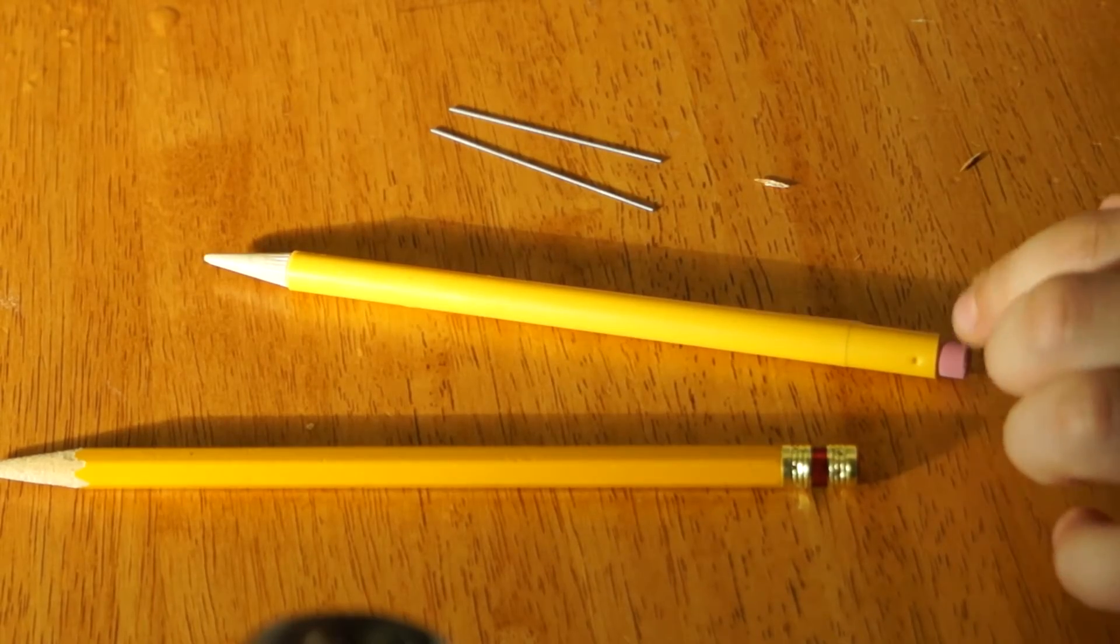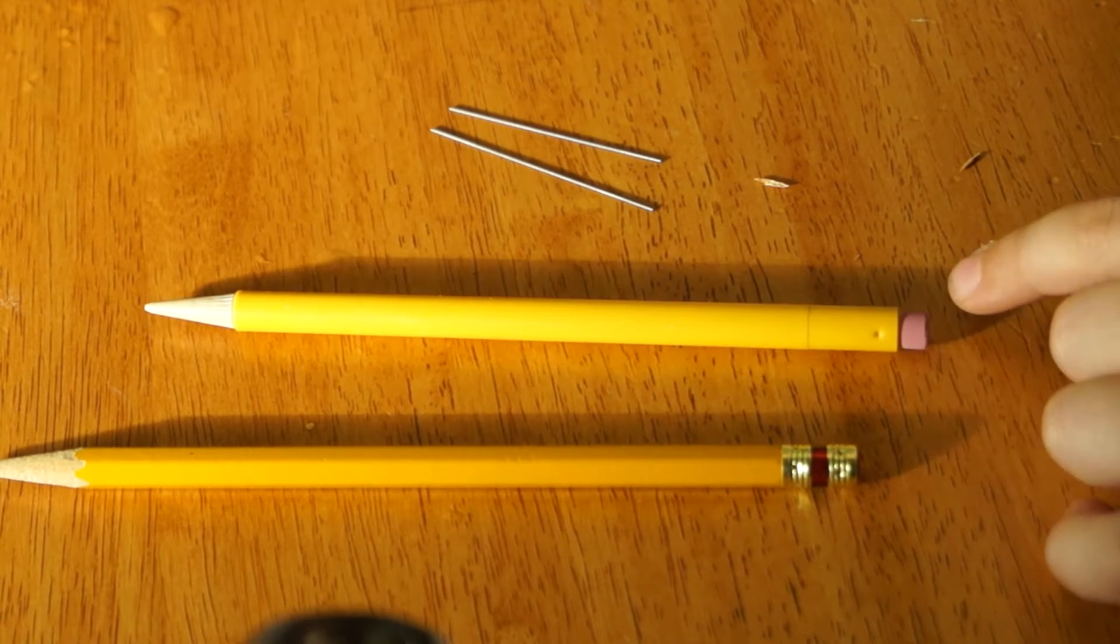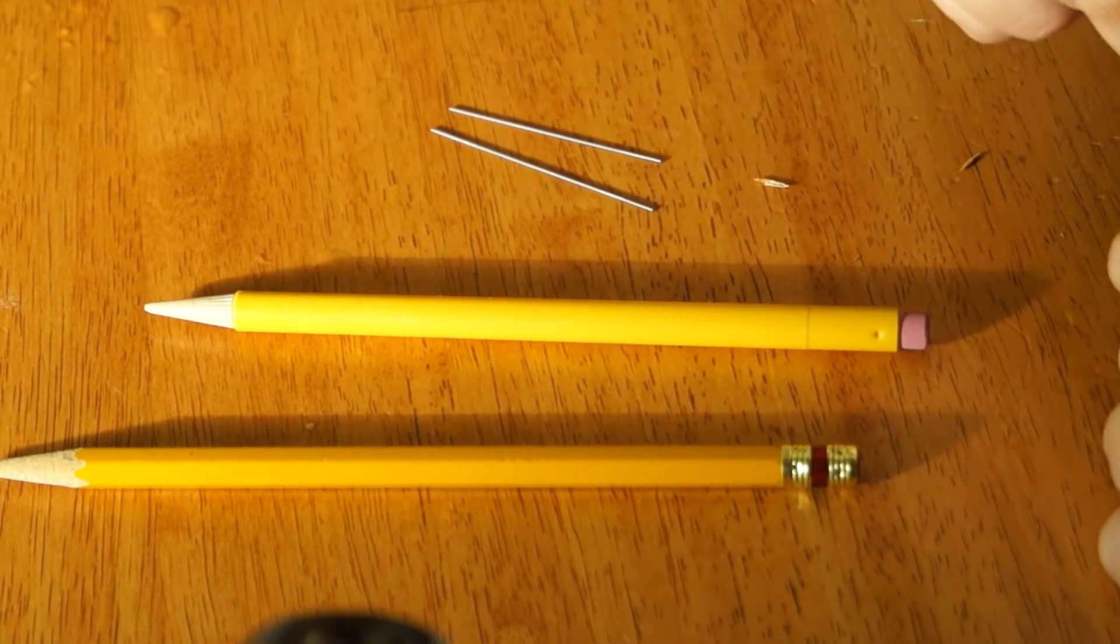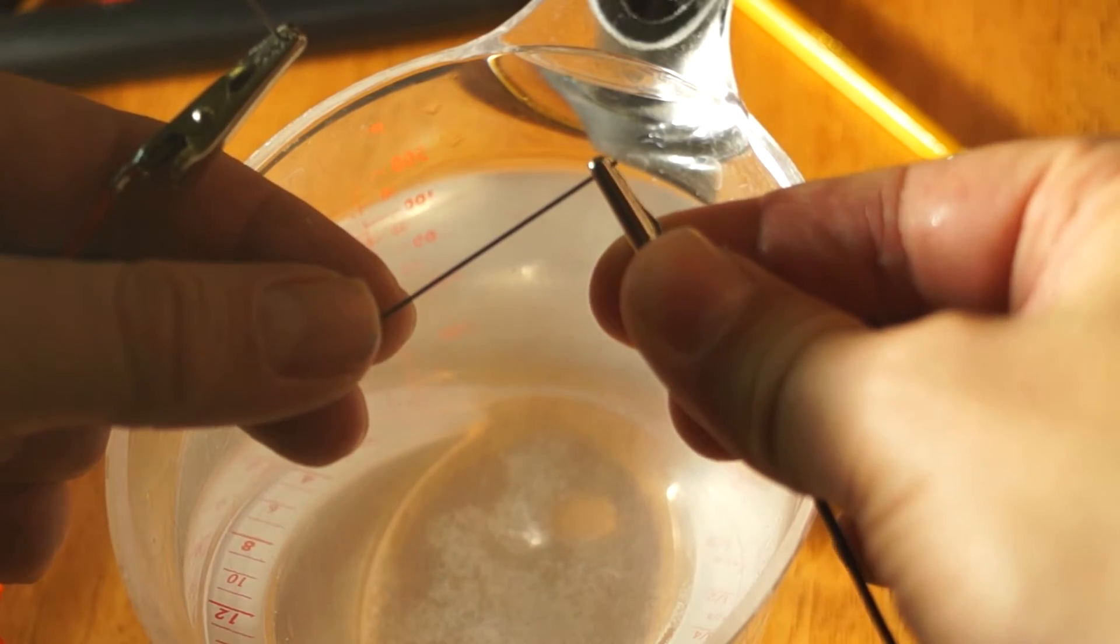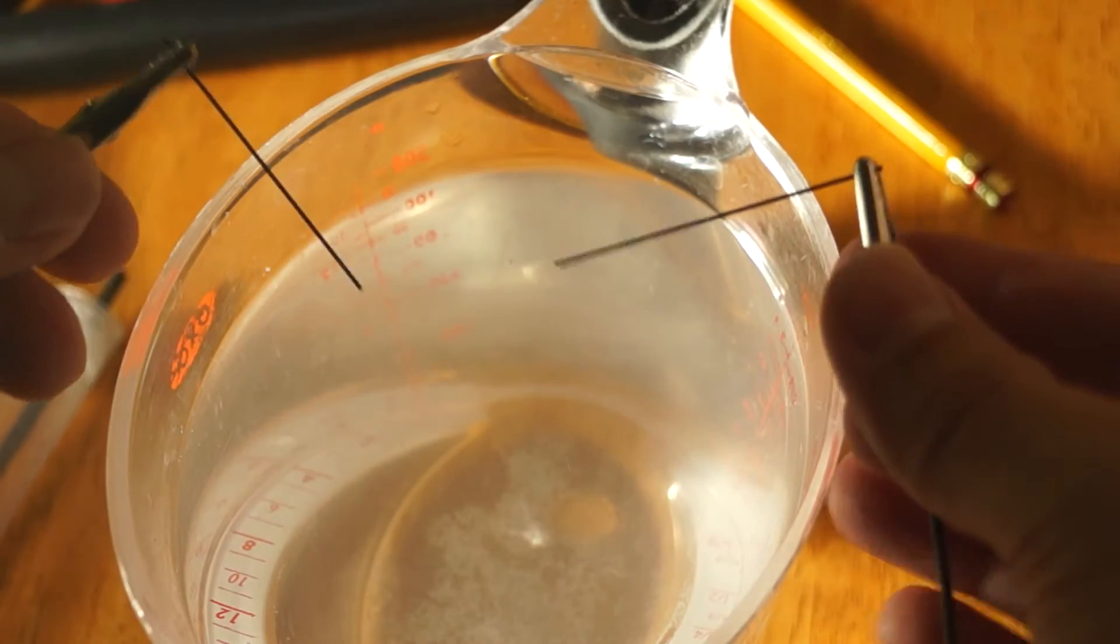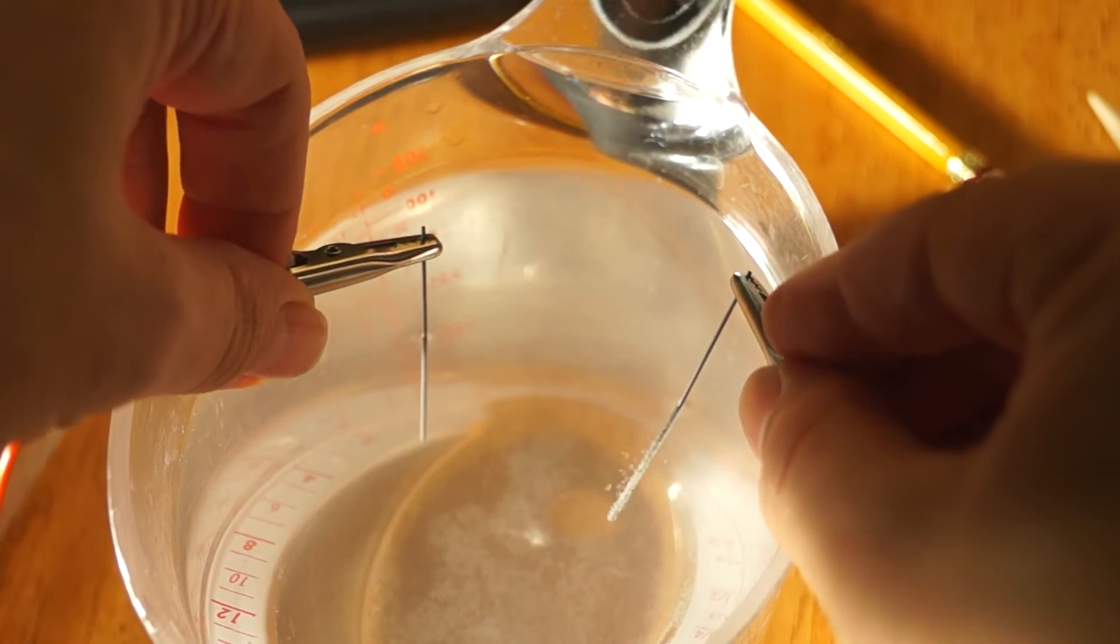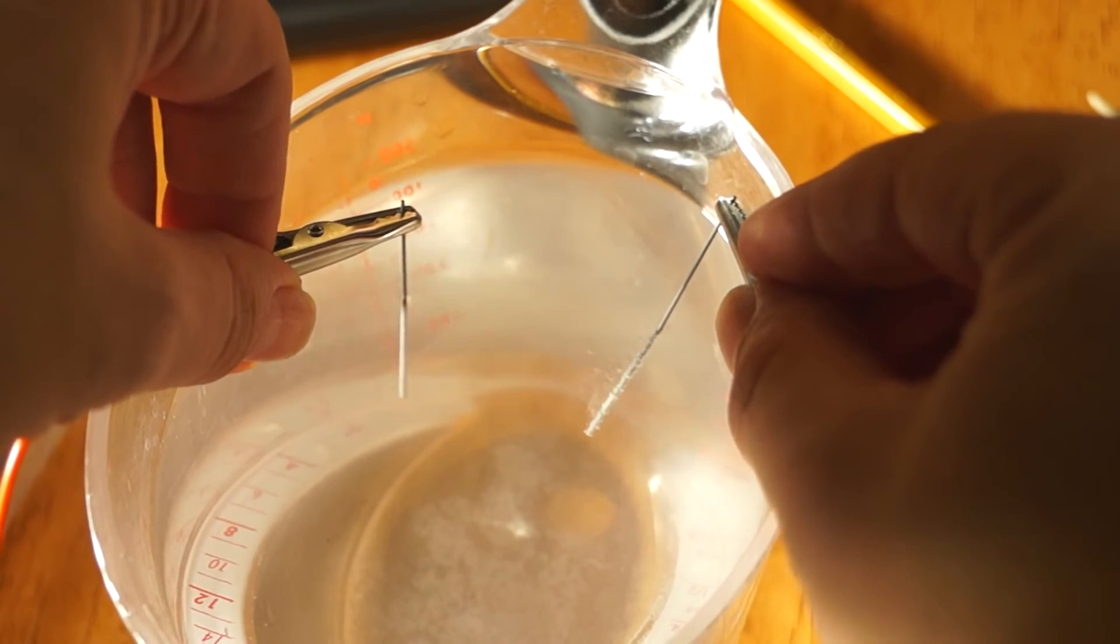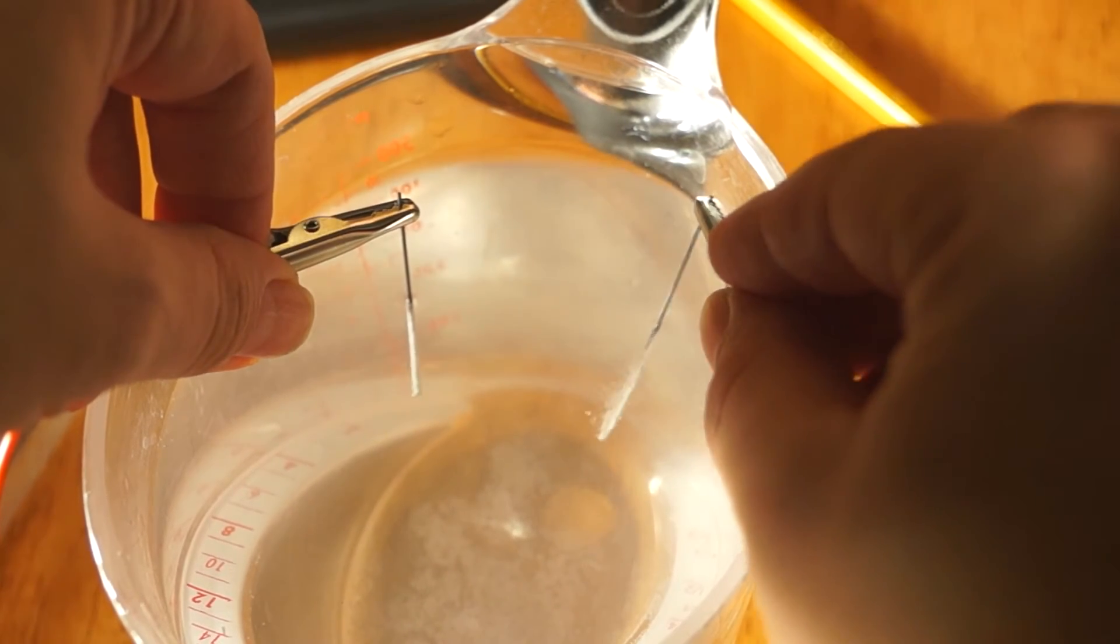So what I want to know is if pencil lead would work, because it has partly graphite. I have my dad putting the lead in of an automatic mechanical pencil. And we're going to see if it bubbles. Oh! Oh! It's working! It's working!